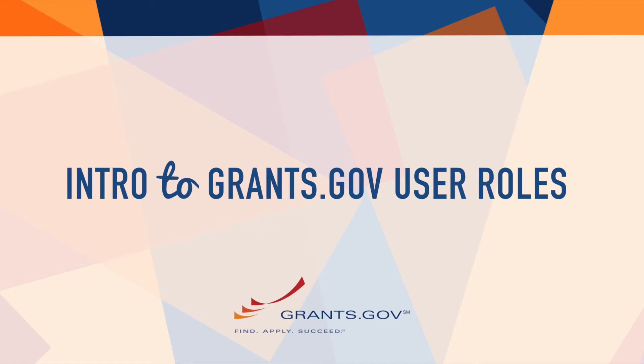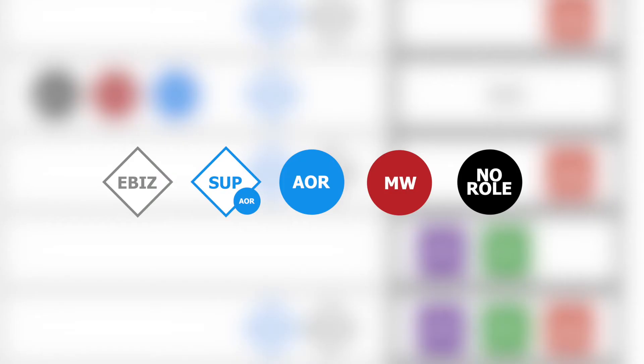Organization applicants can be assigned a range of roles and access levels after registering with Grants.gov. Let's look more closely at the roles applicants can take on.